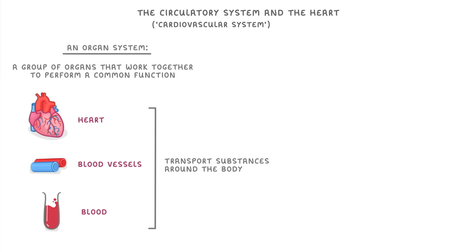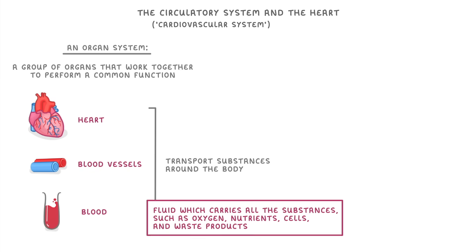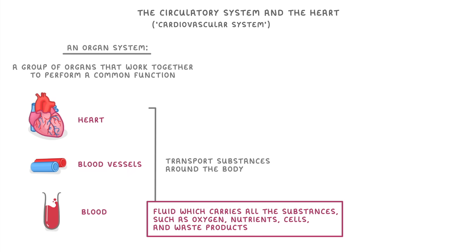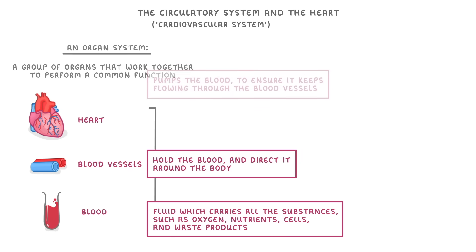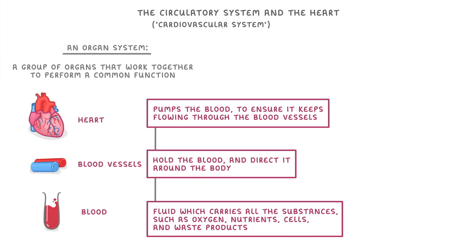The role they're performing is to transport substances around the body. More specifically, the blood is the fluid which carries all of those substances such as oxygen and nutrients, cells, and waste products. The blood vessels hold the blood and direct it around the body, and the heart pumps the blood to ensure that it keeps flowing through the vessels.